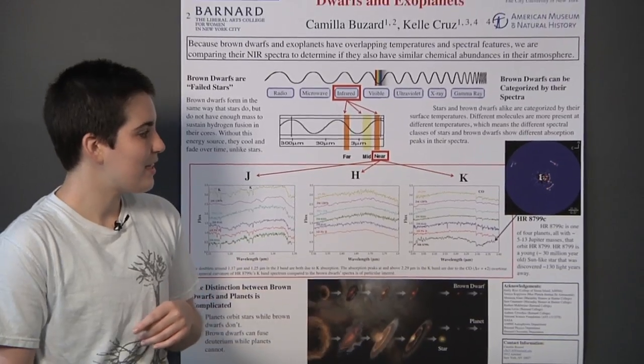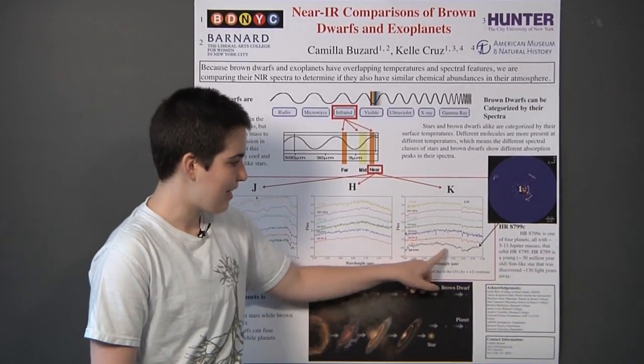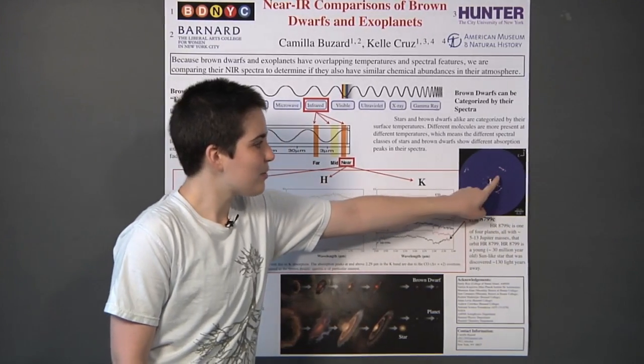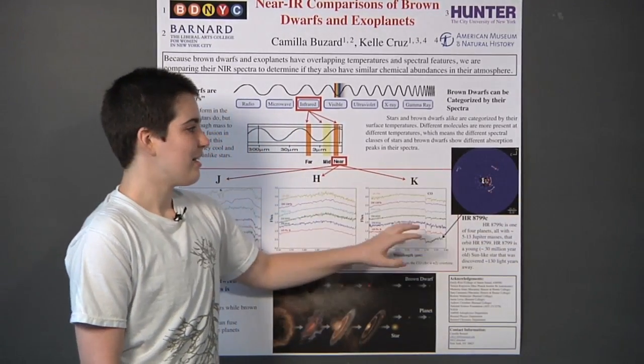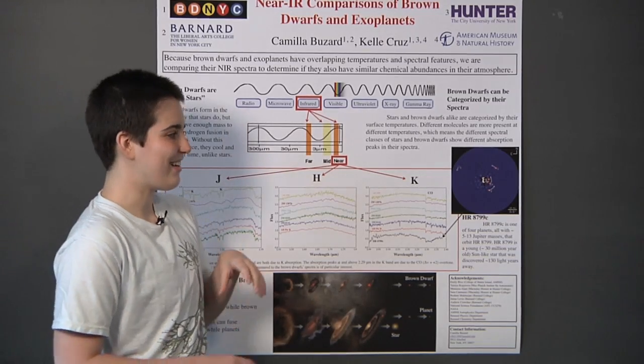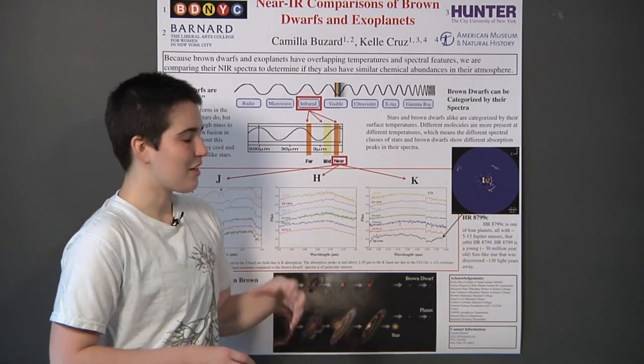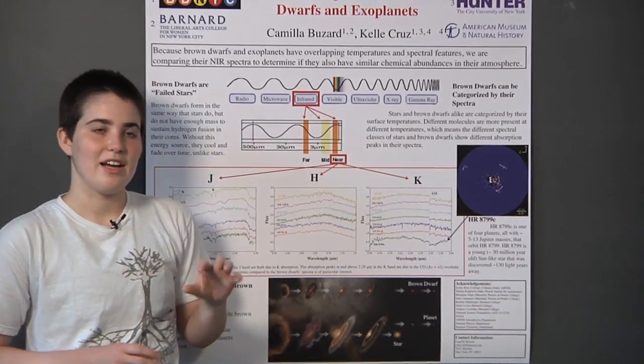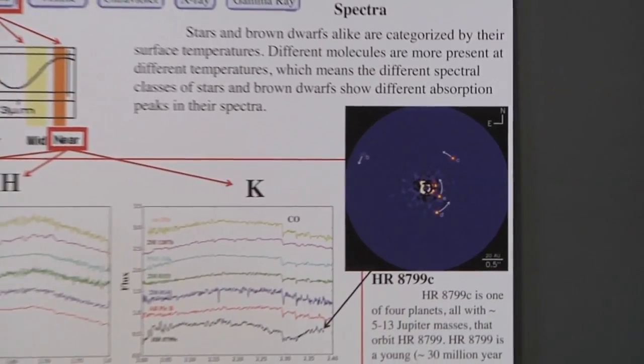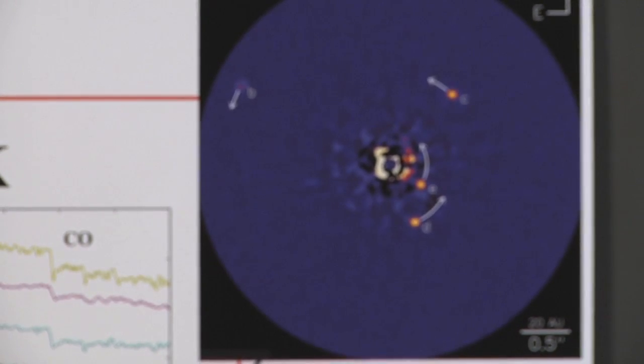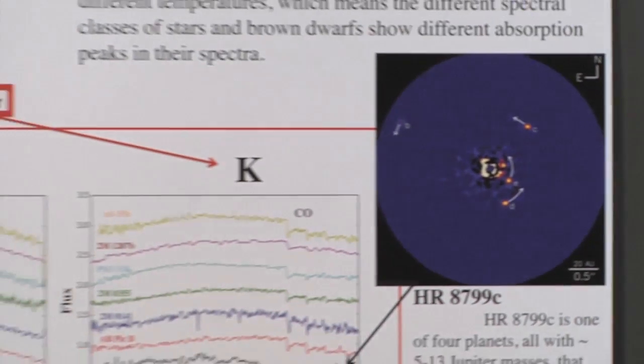What I did this summer really was just look at this planet. This planet, again, is this one right over here. This is actually a direct image of the solar system, which is really neat. It's a star that is 130 light years away, and it has four big planets orbiting it. They're all like 5 to 13 times the mass of Jupiter, so they're bigger than anything in our solar system.